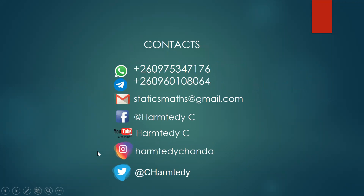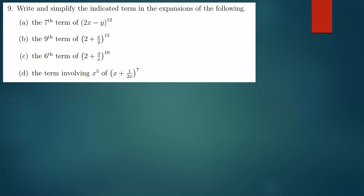These are my contacts that you can use to reach me. We have about four questions, and then we'll also solve the remaining questions on question nine. The question says: write and simplify the indicated term in the expansions of the following. The first question is asking us to find the seventh term of the expansion. The most important thing you need to know is just the formula for the nth term of any binomial expansion.